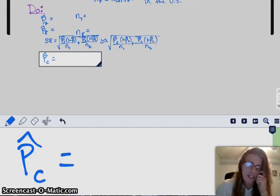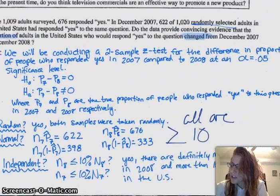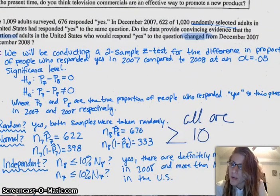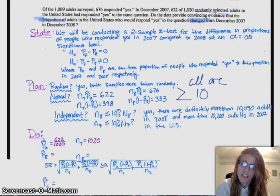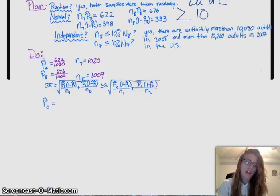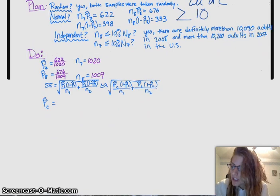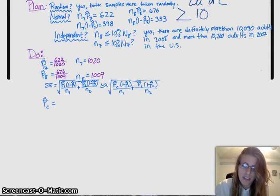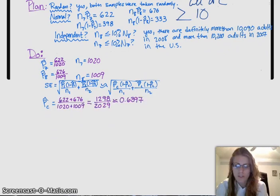Luckily, most of this stuff is really easy to calculate. So in 2007, our proportion of people who responded yes was 622 out of 1020. In 2008, we had 676 out of 1009. And then my combined proportion, or my pooled proportion, is just that 622 plus 676 over the total, I would say that that was like one enormous sample, essentially. So out of 1020 plus 1009.